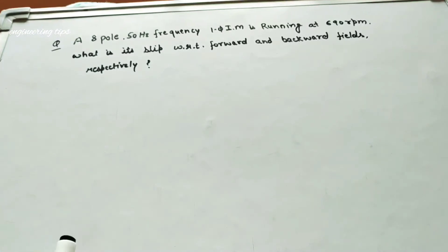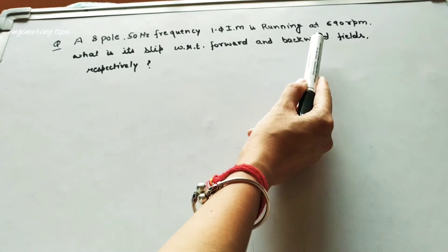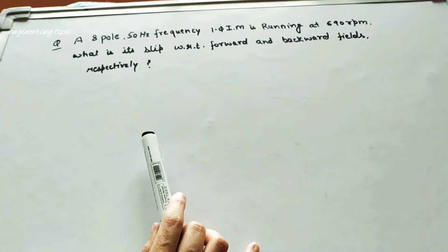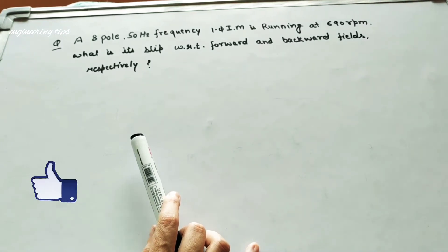The question is: An 8 pole, 50 Hertz frequency, single phase induction motor is running at 690 RPM. What is its slip with respect to forward and backward fields respectively?